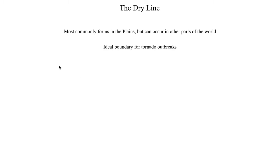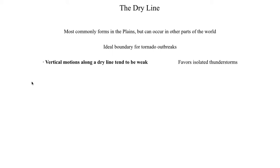One of the really interesting things about dry lines is that if you were to craft a boundary most favorable for tornado outbreaks, it would be hard to find one more ideal than a dry line. The vertical motions — that is, the upward motions along a dry line — tend to be weak, and if you have weak upward motions, you're much more likely to get isolated thunderstorms, which means you're also much more likely to get supercells. Supercell thunderstorms are those rotating thunderstorms that can produce strong to violent long-track tornadoes. You don't want motions too strong, otherwise too many storms go up and interfere with each other, but you don't want them too weak either. The dry line finds that balance better than any other boundary in the atmosphere.